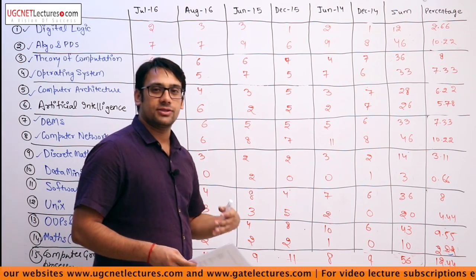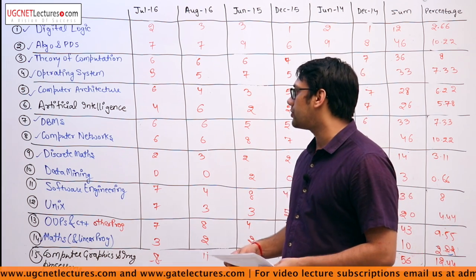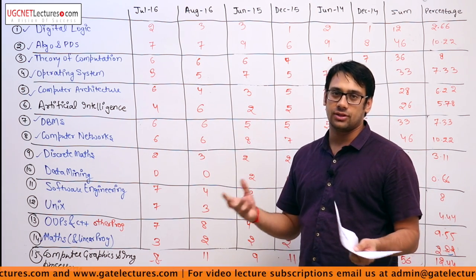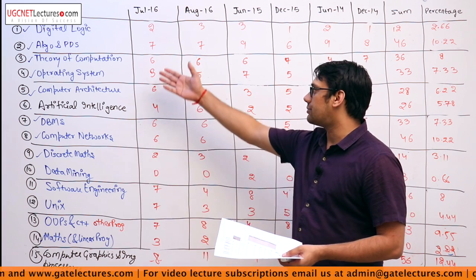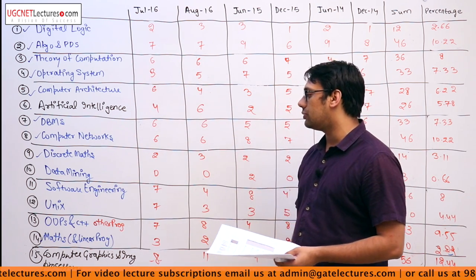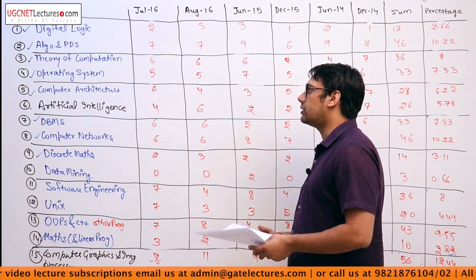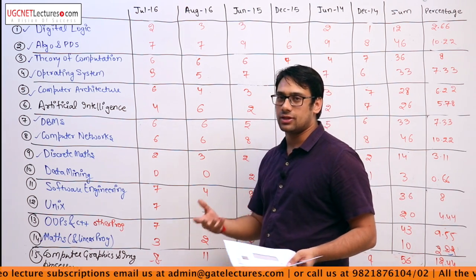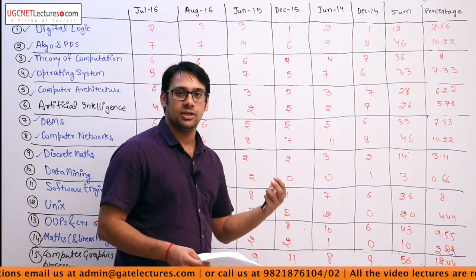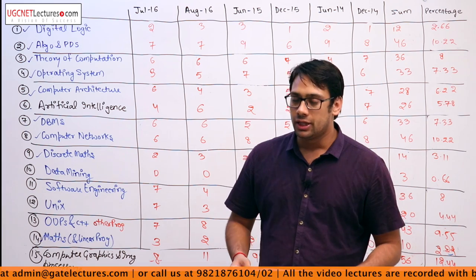Let us analyze this and see what are the changes in terms of Paper 2 and Paper 3. As you can see, there are some subjects which are in Paper 2 as well as in Paper 3. Like digital logic, algorithms — all the subjects written in blue colour — are in Paper 2 as well as in Paper 3. The only difference is the percentage of marks these subjects are contributing.